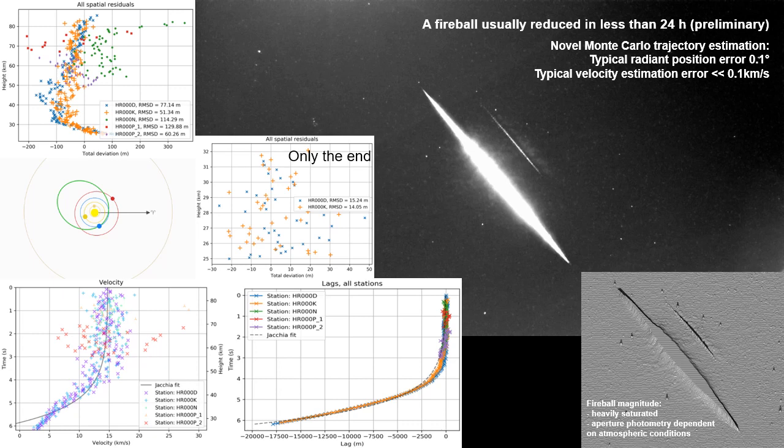Here is an example of a meteorite-dropping fireball observed by GMN cameras. For bright fireballs, we do positional picks manually, often within 24 hours, because we've set up the tool chain to make this easy. In this case, the spatial fit residuals showed a deviation at the end — the final fragment really did have a transverse velocity, deviating from the initial trajectory. We computed the trajectory of this final fragment with positional uncertainties of only about 15 meters, and velocity measurements were very consistent between stations. When we predicted the location of the fall, it turned out it fell into a minefield, so we didn't really want to send people there for a search.